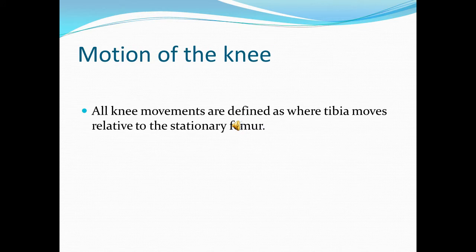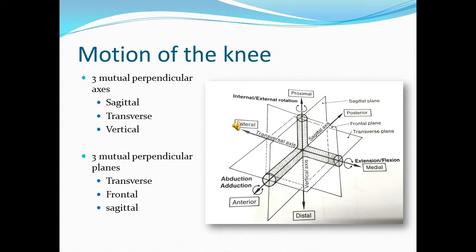Motion of the knee. All the knee movements are defined as where the tibia moves relative to the stationary femur. There are three mutually perpendicular axes — sagittal, transverse, and vertical — and there are three mutually perpendicular planes — transverse, frontal, and sagittal planes.